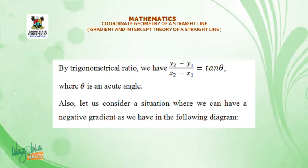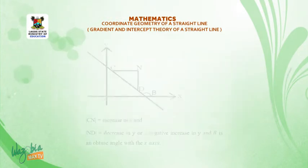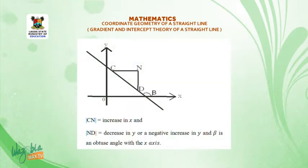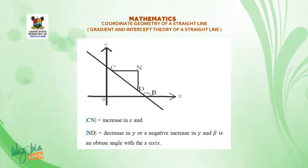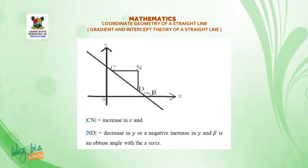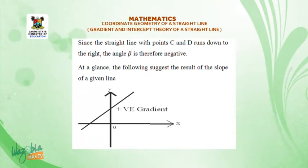Now consider a situation where we have a negative gradient. In the diagram, CN — that is the modulus CN — is equal to increase in x, and modulus ND is equal to decrease in y, or a negative increase in y. Beta is an obtuse angle with the x-axis. Since the straight line with points C and D runs down to the right, the angle beta is therefore negative.